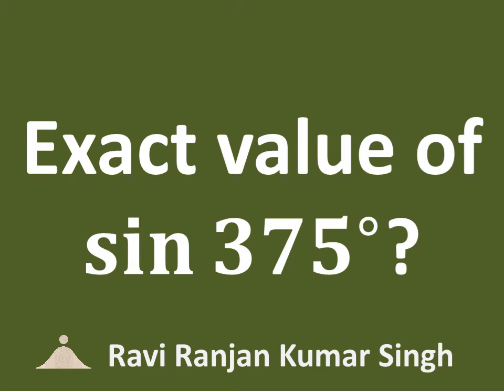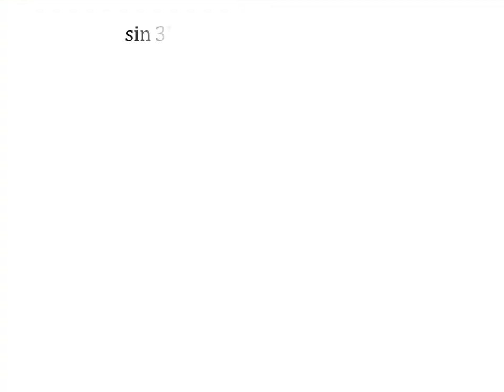In this video, we will learn to find the exact value of sine of 375 degrees. 375 degrees is equal to 270 degrees plus 105 degrees. So, sine of 375 degrees is equal to sine of 270 degrees plus 105 degrees.